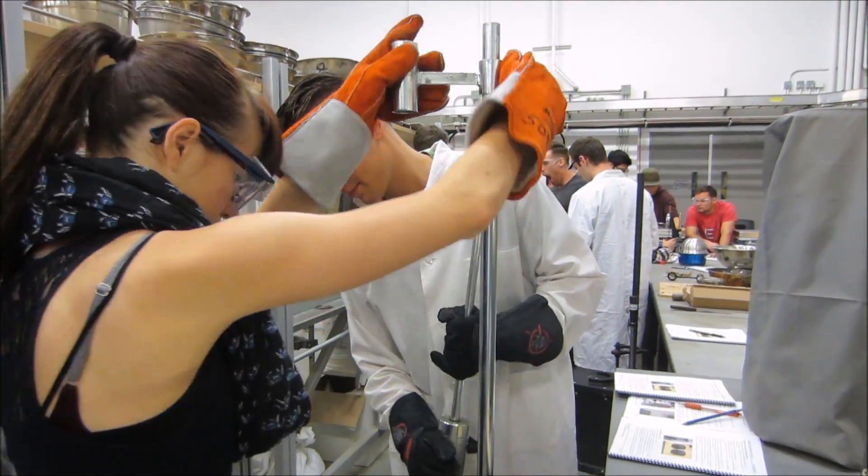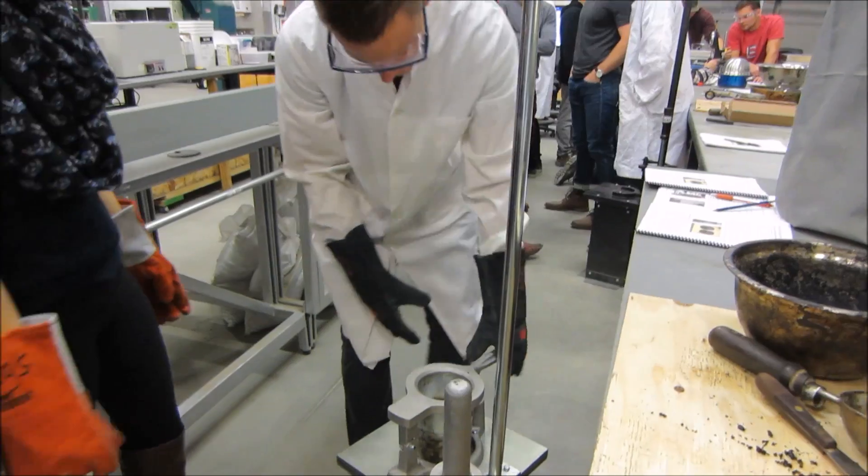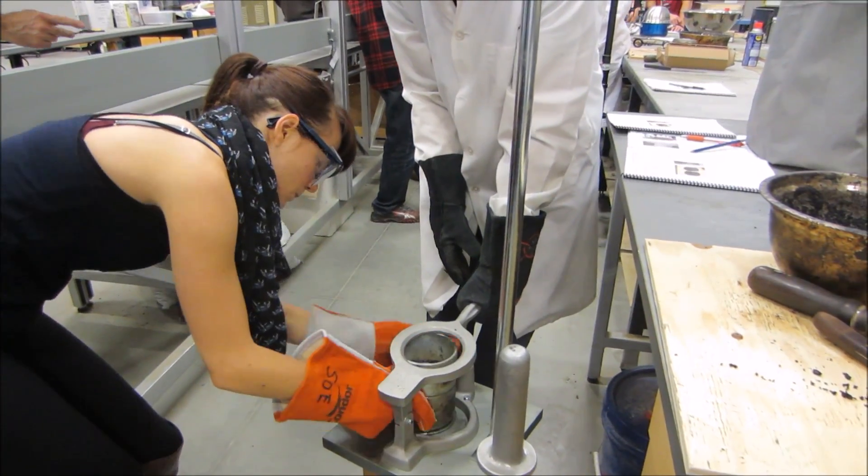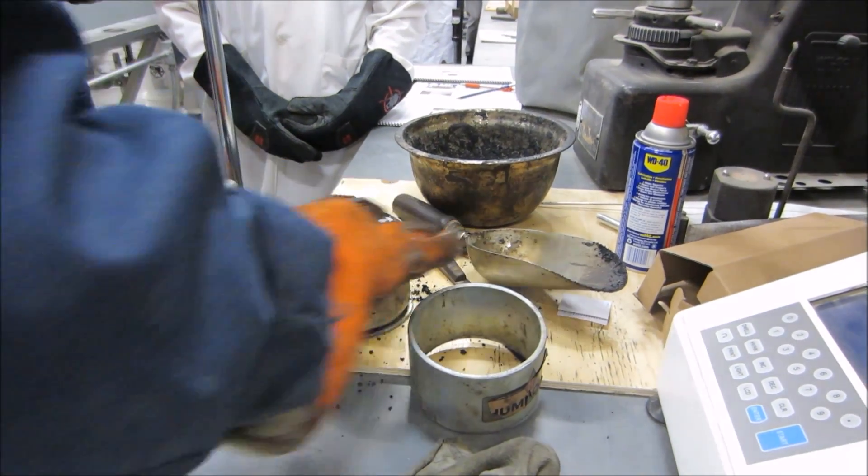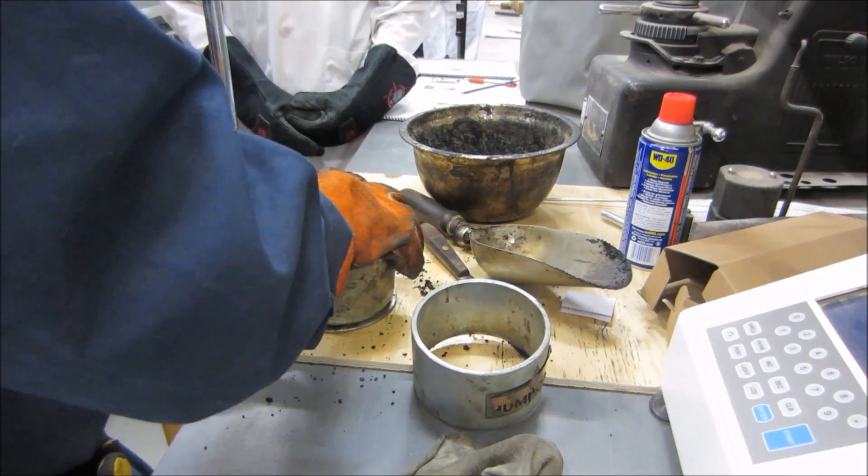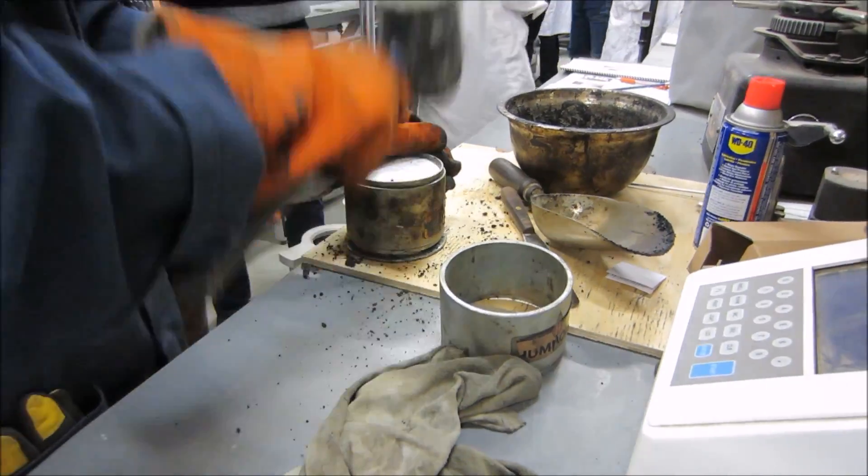Take the specimen out of the apparatus and remove the collar from the mold. Remove the base of the mold and place it on the opposite side of the specimen. Push the specimen onto the base until the base is reattached to the mold. If needed, use a mallet to make the mold lower to the base.